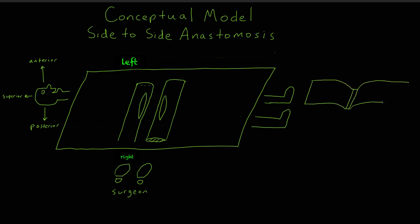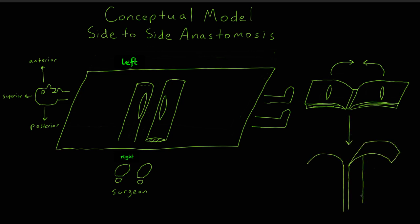In the same way that a book is closed, these two enterotomies will be brought together by folding anteriorly towards the transverse plane that separates them. As a result, the two eye-shaped defects will be superimposed to create a single new connection between the two loops of bowel. By virtue of the folding, the edges of the enterotomies will now be oriented anteriorly and posteriorly. If you work backwards — when the enterotomies were originally made and the book was open, so to speak — you will see that the two edges of the different enterotomies closest to one another represent the posterior edges of the future anastomosis, and the two edges furthest from one another represent the anterior edges of the future anastomosis.